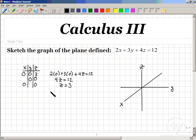In the second case, if y and z are 0, then 2x plus 3 times 0 plus 4 times 0 equals 12, so 2x equals 12 and x is 6.